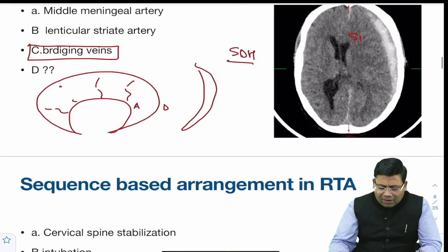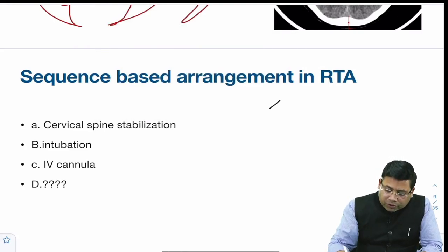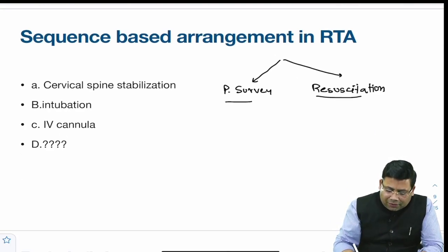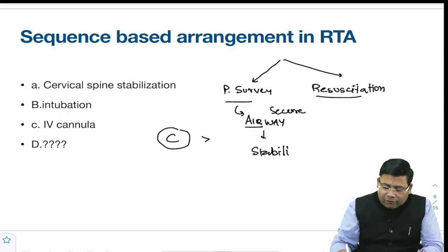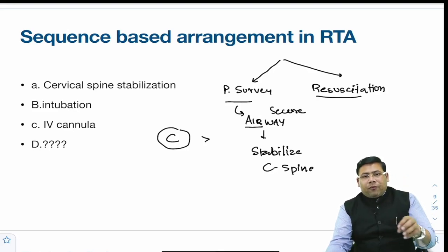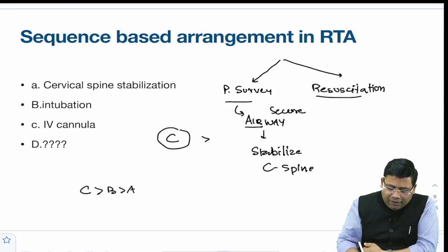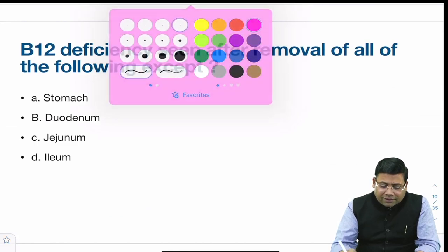There was a sequence-based arrangement question on RTA management. Primary survey and resuscitation are done simultaneously. The sequence would be: C (circulation/catastrophic bleeding) first, then airway — secure airway and stabilize the C-spine. The order is not always a strict dictum; if there is catastrophic bleeding, you stop the bleeding first. The sequence follows C-A-B-C-D-E, so C then B then A is the probable answer given the options.